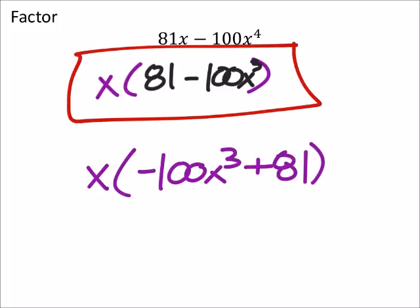But we don't usually like that leading coefficient to be negative in any binomial or trinomial or polynomial, really. So we are going to have to factor out a negative and make this an x. So that gives me 100x cubed, but now it's minus 81.